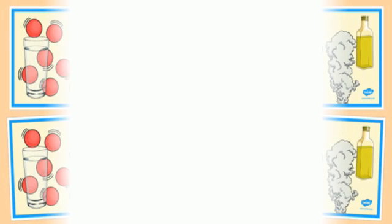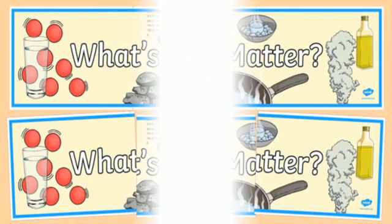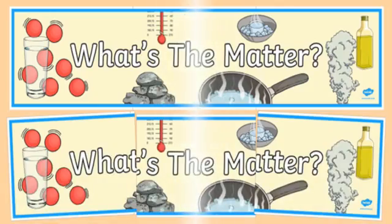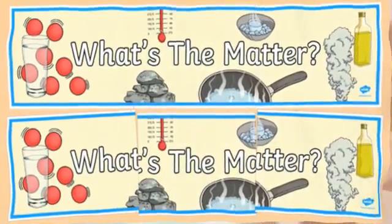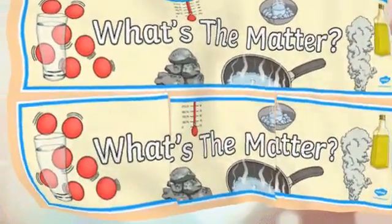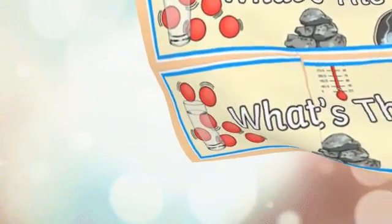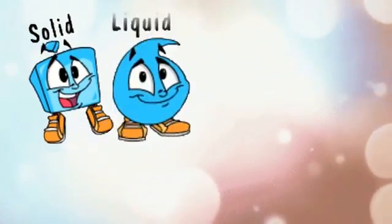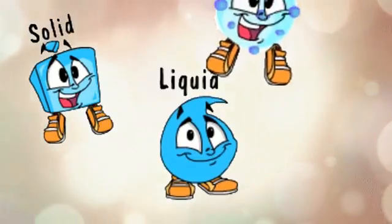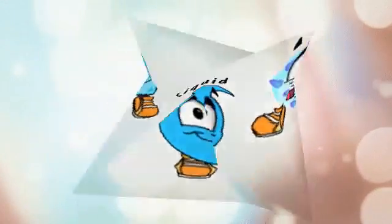Properties of matter. Everything that takes up space and has mass is called matter. All the objects you see around you are made of matter. Matter usually comes in three forms on earth. The three forms are solid, liquid, and gas. These forms are called the states of matter.